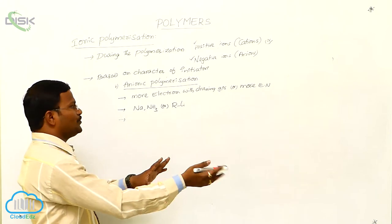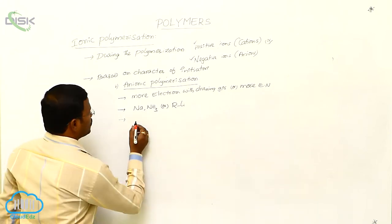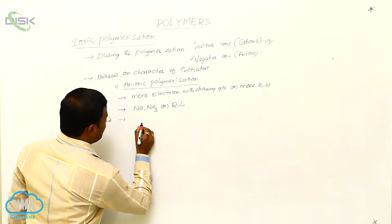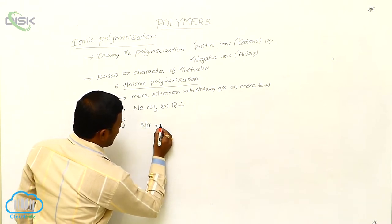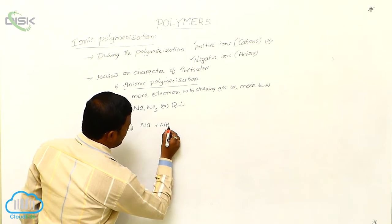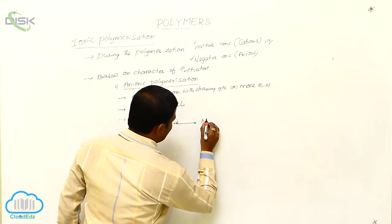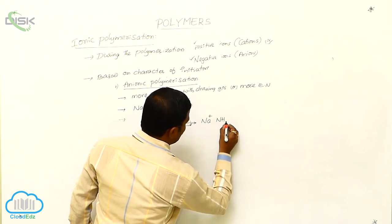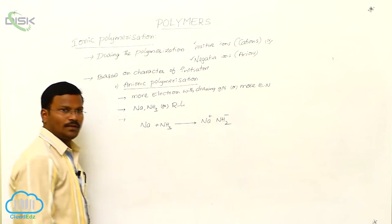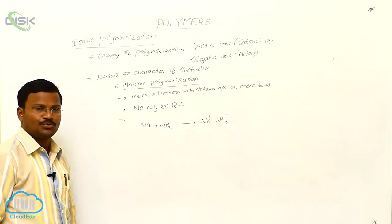Chain propagation itself produces the final polymer. So let us write one example here. In the first step, sodium in ammonia reacts with each other and produces Na plus NH2 minus.